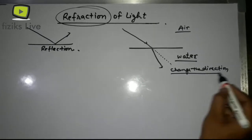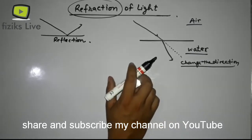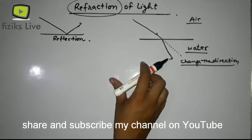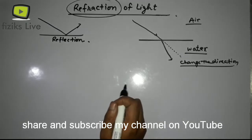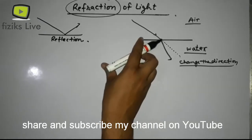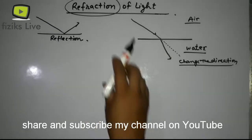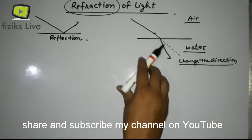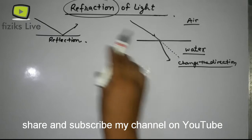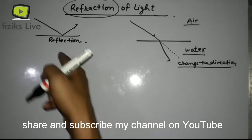We have learned that light travels in a straight line, but in this case, as light enters another medium, its previous state is disturbed and its direction changes. This process is called refraction of light. When light travels from one medium to another, it changes direction — this process is called refraction of light.